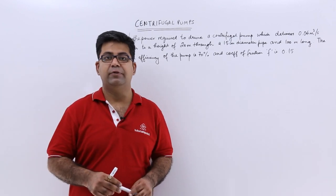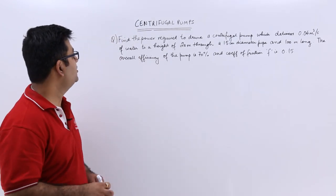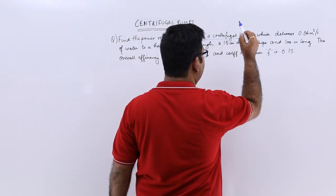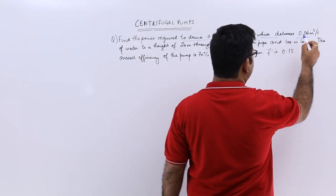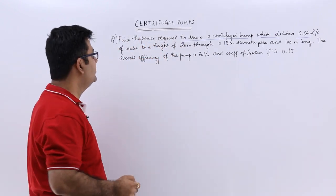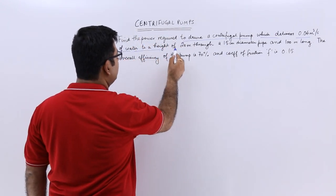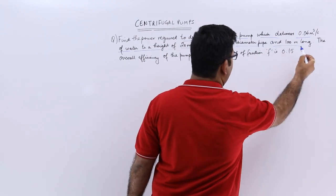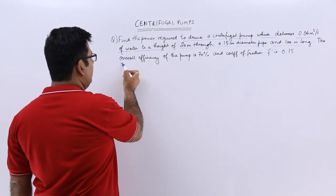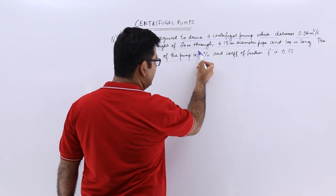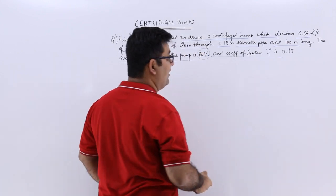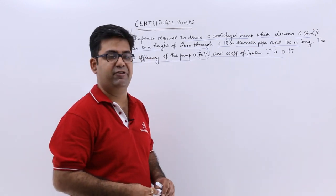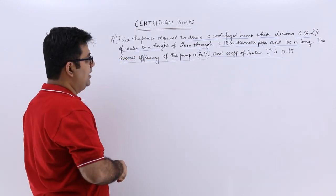Now let's look at question number three on centrifugal pumps. The question says: find the power required to drive a centrifugal pump which delivers 0.04 cubic meters per second of water to a height of 20 meters through a 15 centimeter diameter pipe and 100 meters long. The overall efficiency of the pump is 70 percent and the coefficient of friction F is 0.15, which will be used in the Darcy-Weisbach equation.